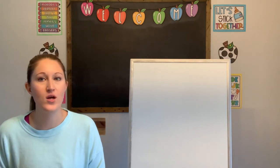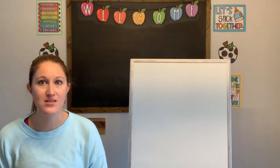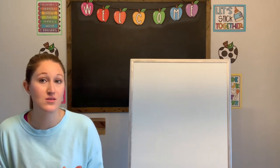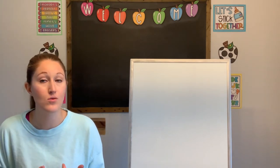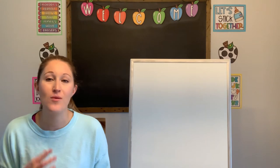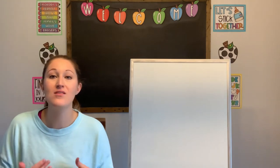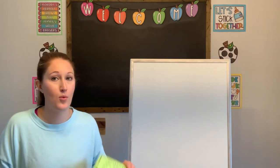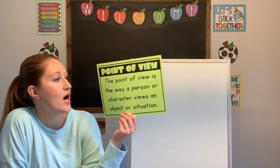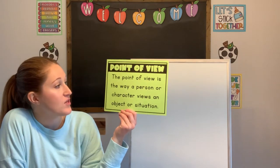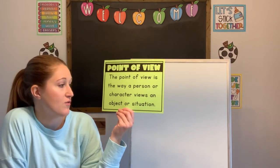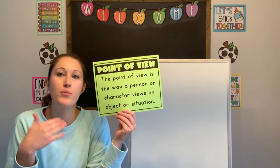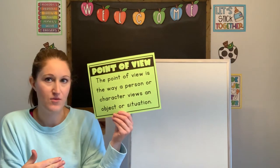Now, we've talked about point of view in the past — when we've talked about how books can be written in first person, second person, or third person, and we're talking about the language that an author uses. Today, when we talk about point of view, we're going to talk about how the point of view is the way a person or character views an object or situation — their perspective on something.